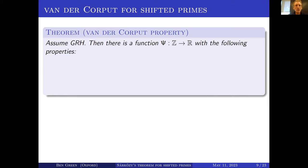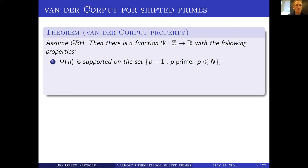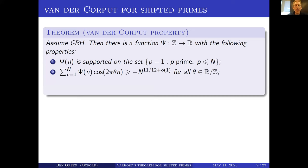Assume GRH. Then there is a function ψ from the integers to ℝ with the following properties: it is supported on the set of shifted primes less than n; its Fourier transform — or rather the real part of its exponential sum — is almost non-negative everywhere, lower bounded by essentially minus n^{11/12}. If ψ has average value one, that exponential sum could be as small as minus n, which is much smaller, so this is saying the exponential sum is close to being positive everywhere.